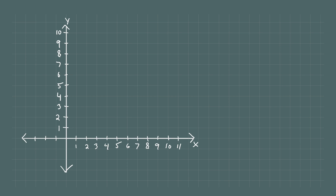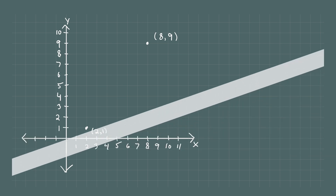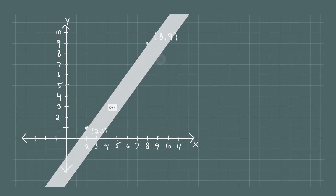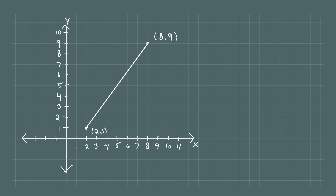For our first example, we're going to find the distance between the point (2, 1) and the point (8, 9). I'll label the coordinates for both points — this one is (2, 1) and this point up here is (8, 9). I'm going to use a ruler to connect these two points. What we want to do is find the distance between them, and I'm going to call the distance d.